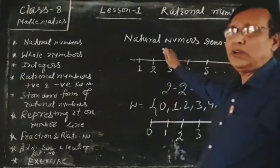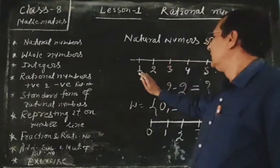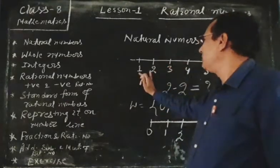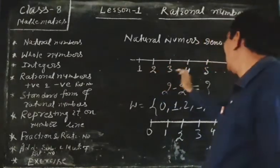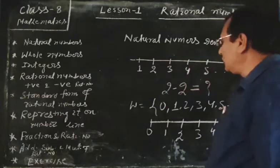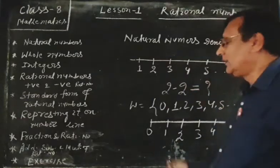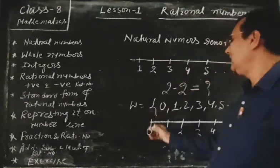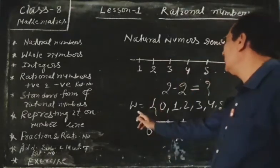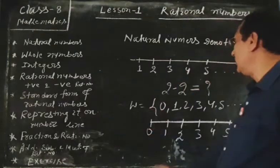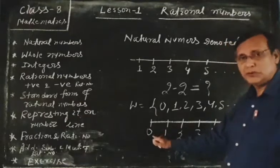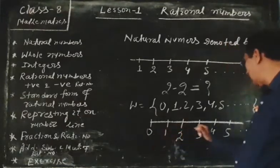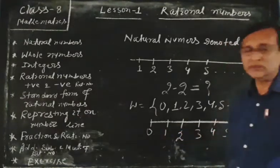In the natural numbers, the least number is 1. Similarly, in the whole numbers, the least number is 0.